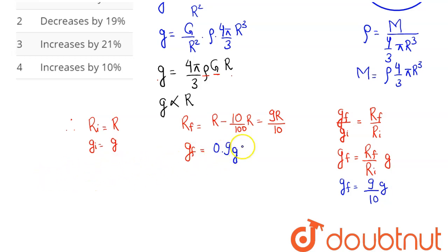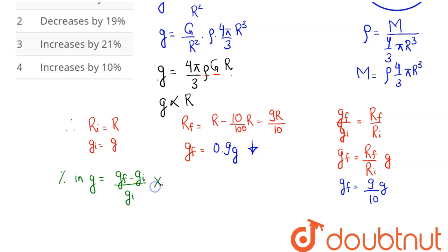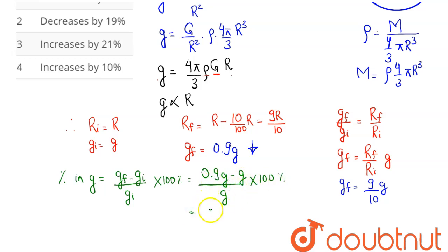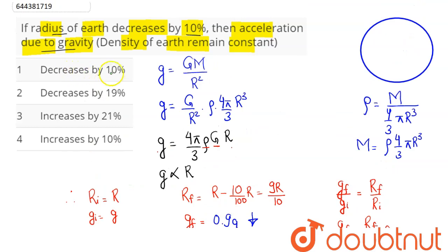The final value of g is 0.9g, so g decreases. The percentage change in g is: (g_f − g_i) / g_i × 100% = (0.9g − g) / g × 100% = −0.1 × 100 = −10 percent. So g decreases by 10 percent, and option number one — decreases by 10 percent — is the correct answer.